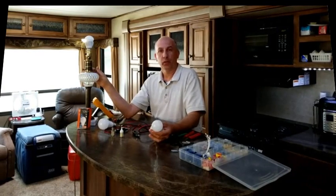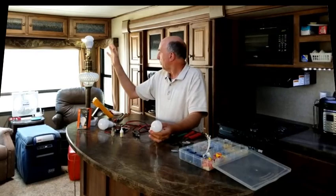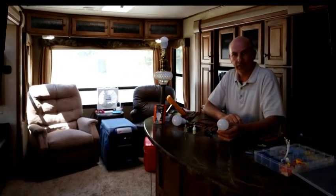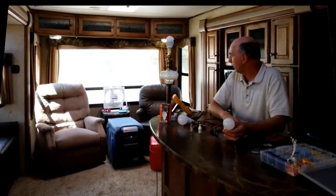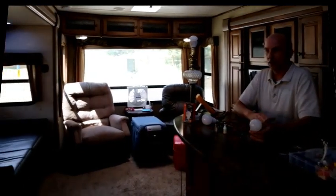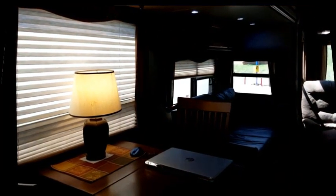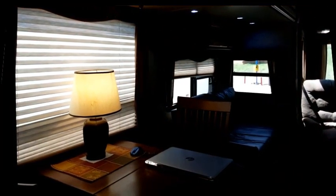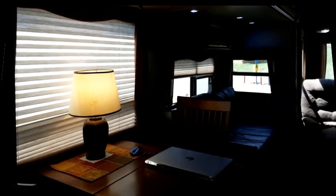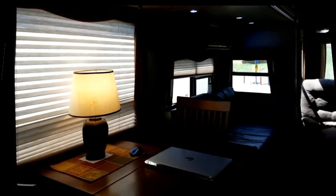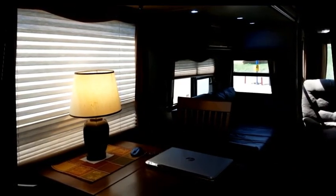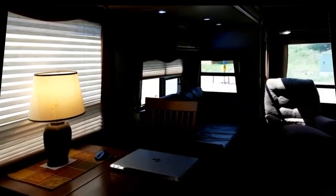In our Sprinter travel trailer we have a rear living room. Between the two seats we need additional lighting during the evening for reading and just general lighting. I also needed additional lighting over on our dinette so when I'm working on my computer I have better lighting. That light behind you there on the dinette has already been converted to run on 12 volts DC. Today I'm going to show you how I did that and how easy it is to do.